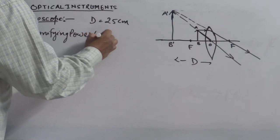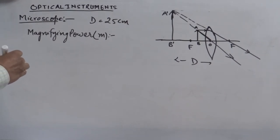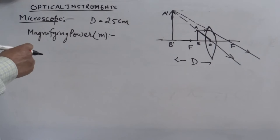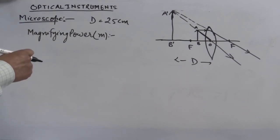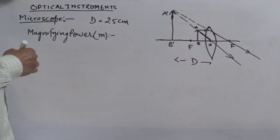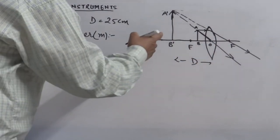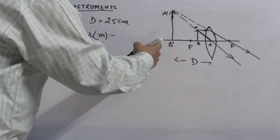Magnifying power of the simple microscope is defined as the ratio of the angle subtended by the image to the angle subtended by the object at the eye, when both are at the least distance of distinct vision. The eye is normally kept at the optical center. A very important condition is that both should be at the least distance of distinct vision.